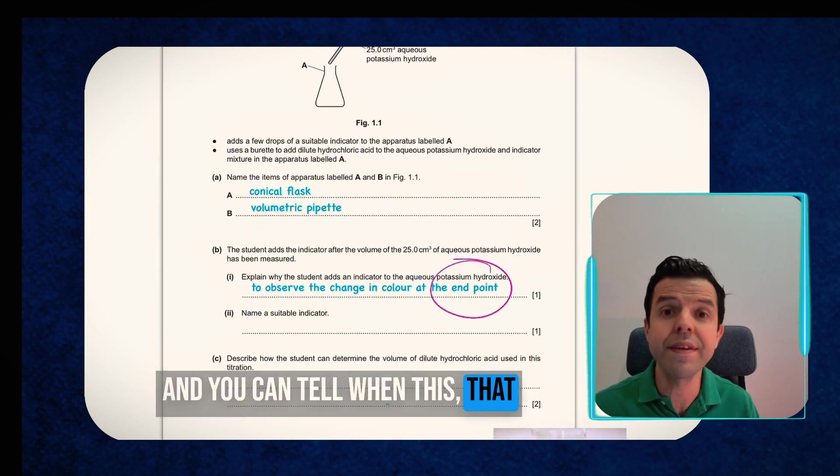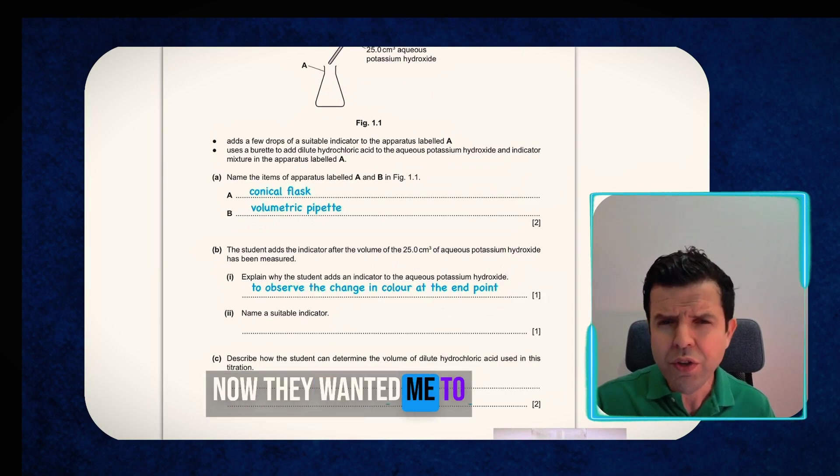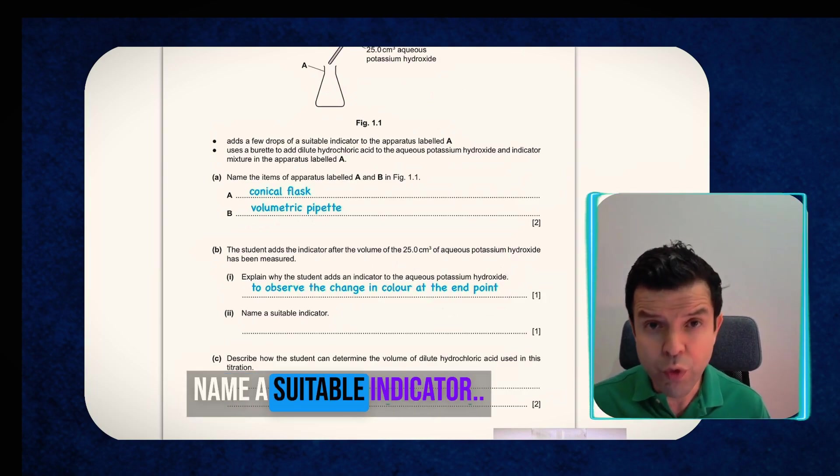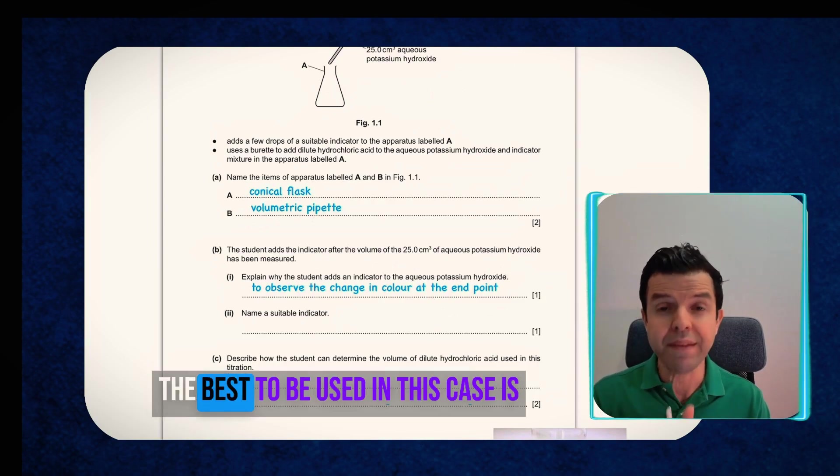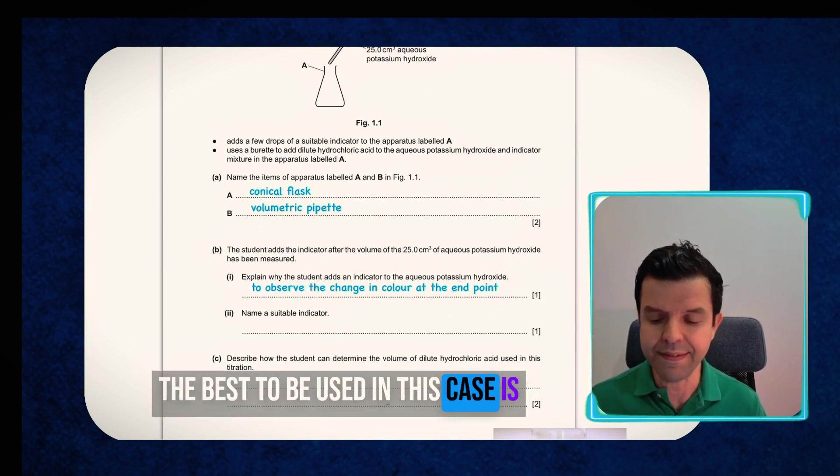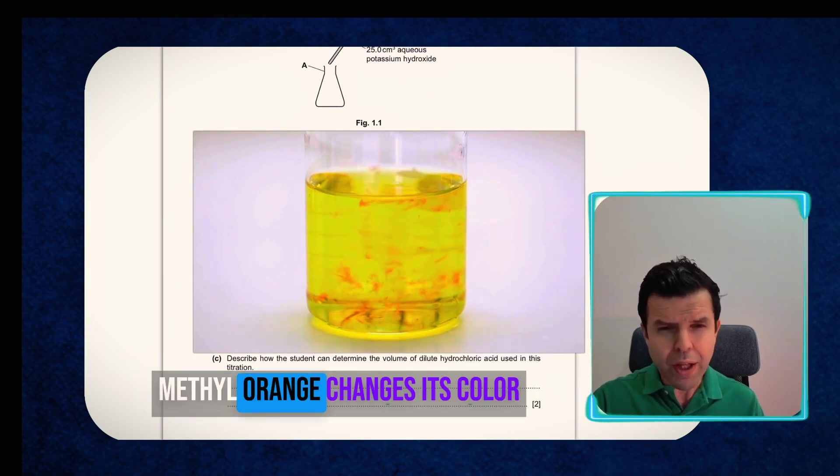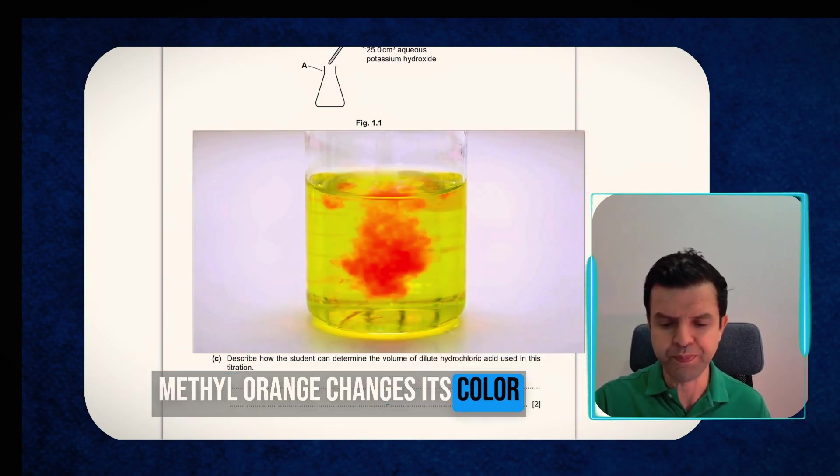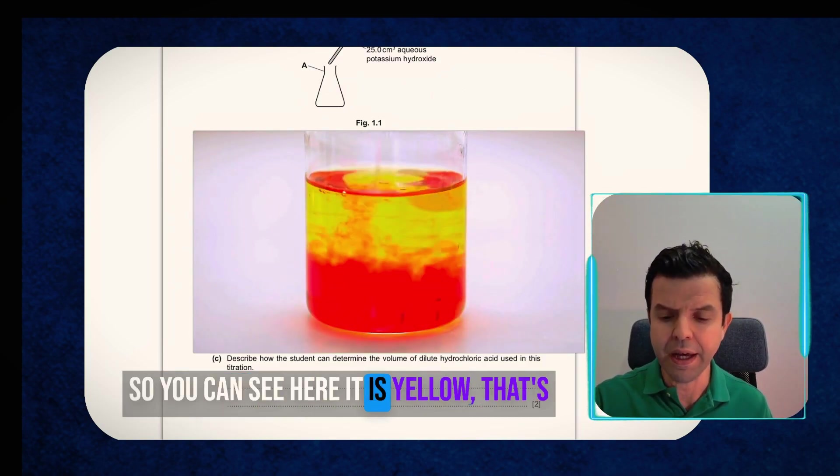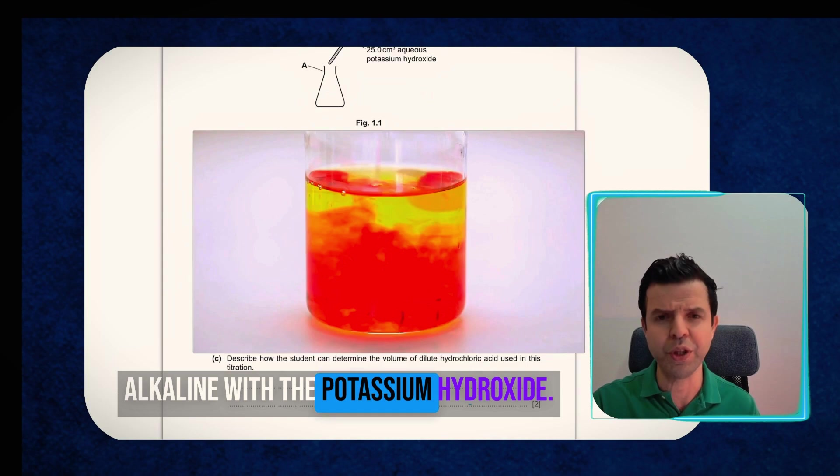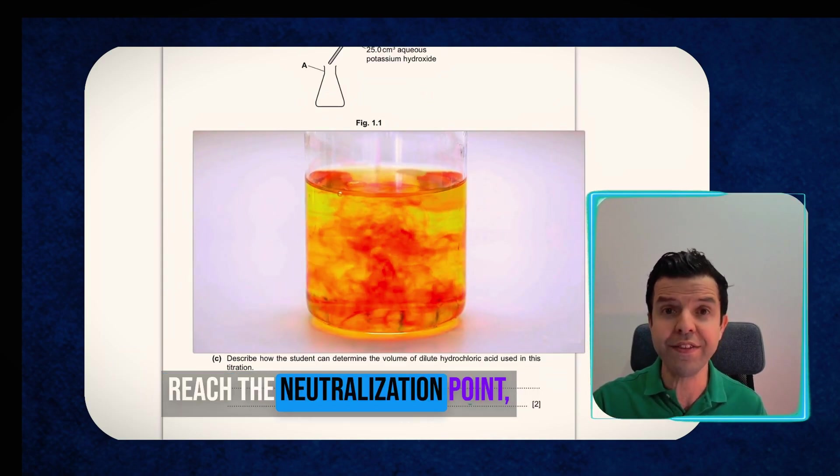Now they wanted me to name a suitable indicator. Obviously you're not going to mention universal indicator. The best to be used in this case is methyl orange or thymolphthalein. Methyl orange changes its color sharply at the neutralization point. So you can see here it is yellow. That's alkaline with the potassium hydroxide. As you add the acid to it and you reach the neutralization point, you will get to the orange color.